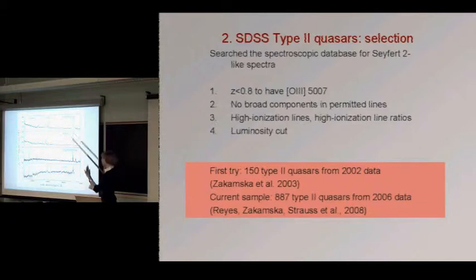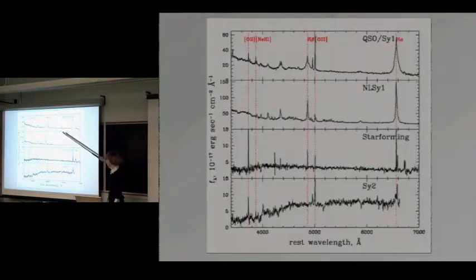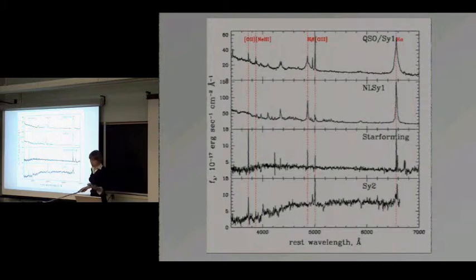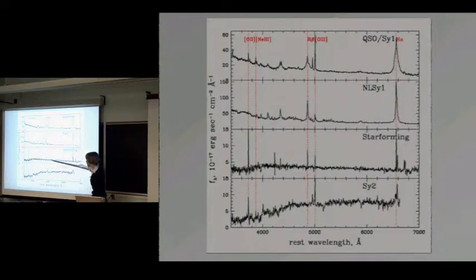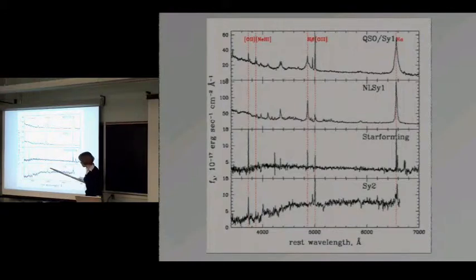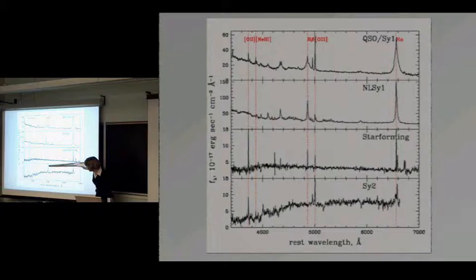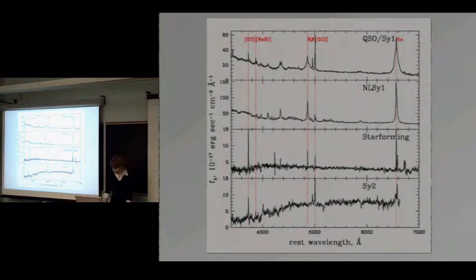Let me show you some spectra. This is a normal Type 1 quasar with a very blue continuum and broad emission lines. This is another normal unobscured quasar with somewhat narrower emission lines. This is a so-called narrow-line Seyfert 1 galaxy, still an unobscured source. This is a star-forming galaxy — you can see the continuum from the galaxy and narrow lines, with O3 to H-beta somewhat less than unity. This is a Seyfert 2 galaxy with low signal-to-noise; the continuum is dominated by the host galaxy, and O3 to H-beta is much higher.